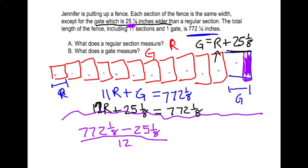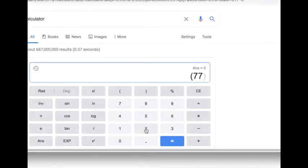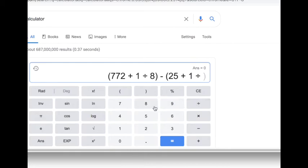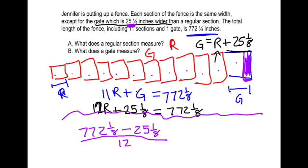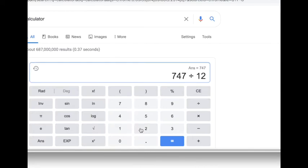Final answers. Here's 772 plus 1 divide by 8, minus 25⅛, equals 747, divide that by 12. 62.25, or 62¼.